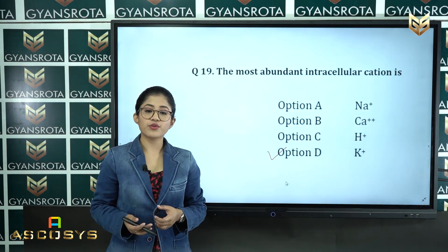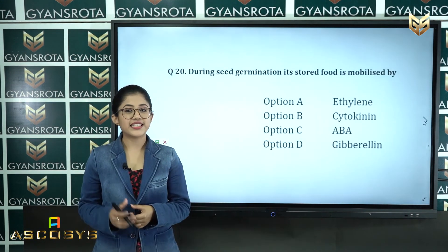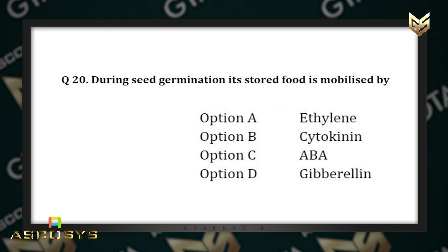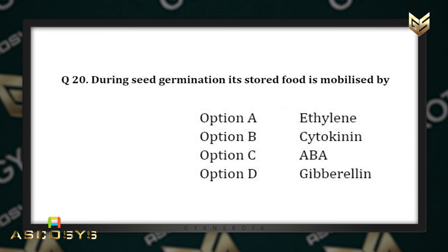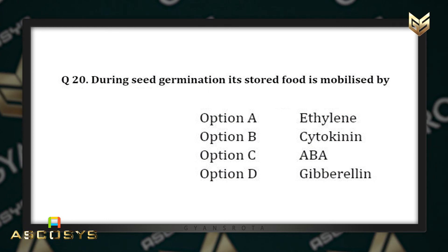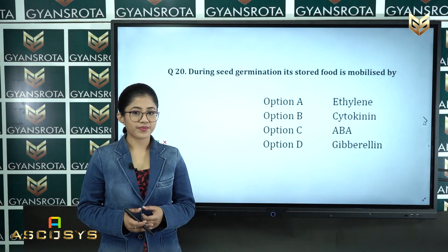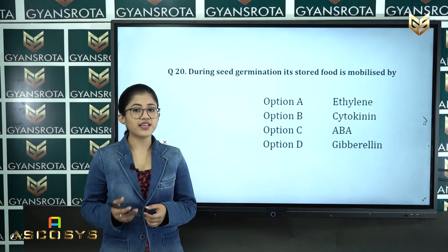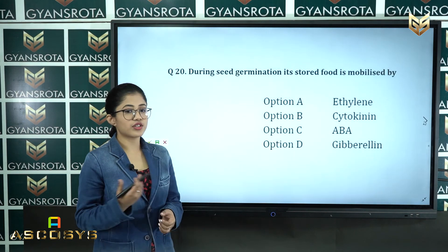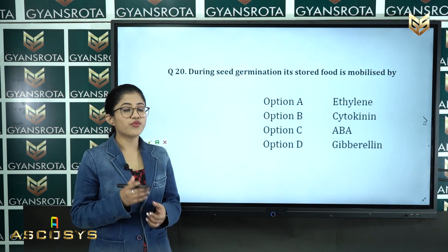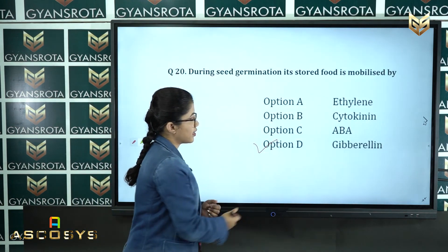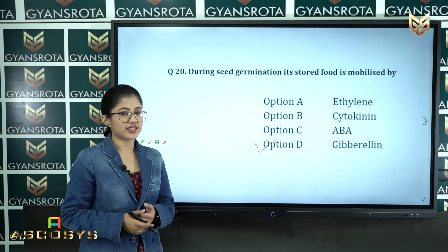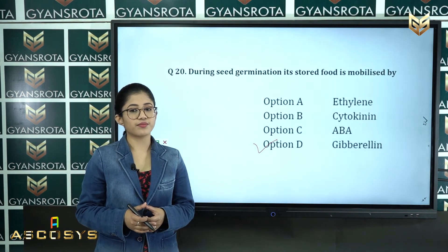Question number twenty: during seed germination, its stored food is mobilized by — option A: ethylene, option B: cytokinin, option C: abscisic acid, option D: gibberellin. This is from the chapter mineral nutrition. The correct answer is option D — gibberellin mobilizes stored food during seed germination.